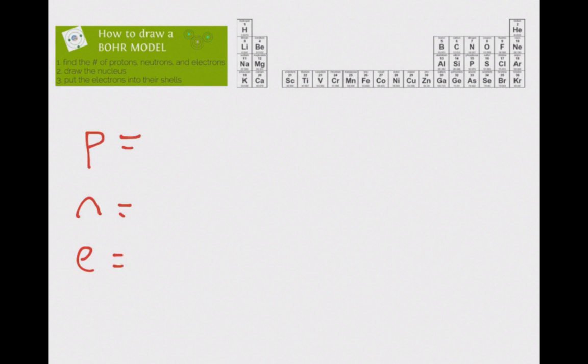All right, let's learn how to draw a Bohr model. Helium is up top here. So helium's atomic number is two. Remember, the atomic number always tells us the number of protons in the nucleus. And because there are two protons, that must mean that there are also two electrons, because it's a neutral atom, so the charges have to cancel. So as many protons as I have, I need electrons as well.